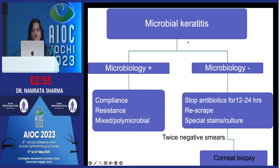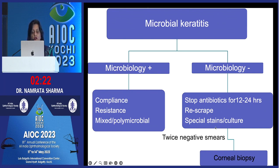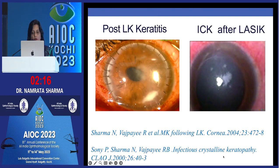When a case of microbial keratitis is not responding, look for the cause. If microbiology is available, check compliance, organism resistance, and whether a mixed or polymicrobial entity is being missed. If microbiology is unavailable and the ulcer is not responding, stop antibiotics for at least 12 hours, re-scrape, and send for special stains and cultures. If smear is twice negative, do a corneal biopsy.